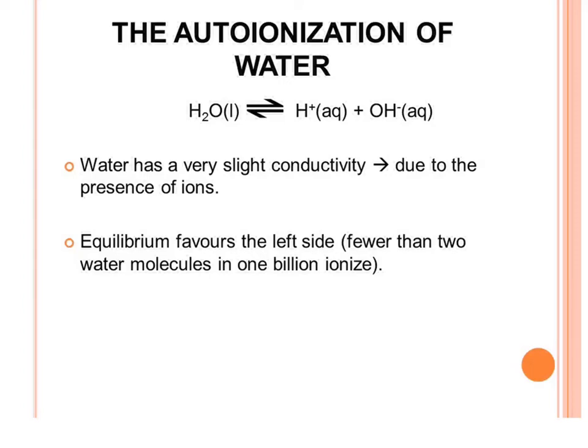Water undergoes a very slight ionization to become H⁺ and OH⁻ ions. Because it ionizes slightly, water has a very slight conductivity, which is due to the presence of the H⁺ and OH⁻ ions.